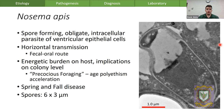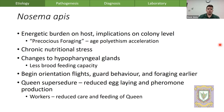With workers, we see something called precocious foraging, where the jobs they are given are accelerated relative to their actual physical age. Worker bees are given progressively more dangerous jobs as they age — starting as nurse bees or members of the queen's retinue, and eventually becoming foragers, which is considered the most dangerous job where they are most expendable.